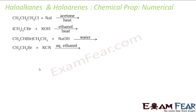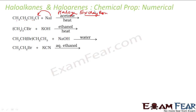The next question: 1-chloropropane reacting with sodium iodide in acetone with heat. This is a halogen exchange reaction — iodine replaces chlorine. This reaction is also called the Finkelstein reaction. The product is CH3CH2CH2I (1-iodopropane) and NaCl.